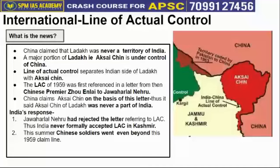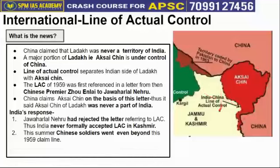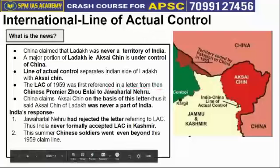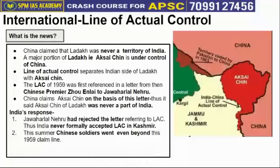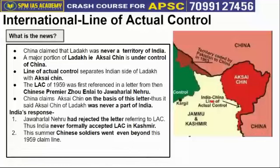China said that Aksai Chin was never India's part, and that their international boundary has always been drawn in a certain way. China claimed that on 7th November 1959, Chinese Premier Zhou Enlai wrote a letter to our Prime Minister Jawaharlal Nehru, and in that letter the Line of Actual Control was mentioned. According to China, since the LAC was defined in that letter in 1959, Aksai Chin belongs to China and India has no claim over it.